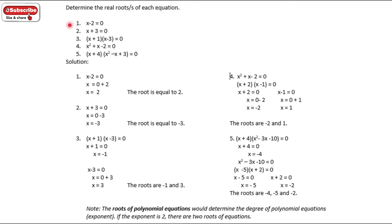For number 1, x minus 2 is equal to 0. Transpose that, so therefore the root is x is equal to 2. For number 2, x plus 3 equals 0. Transpose the positive 3, it becomes negative 3. So the value of x is equal to negative 3.